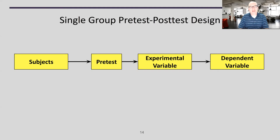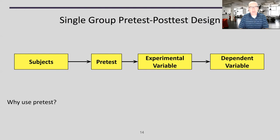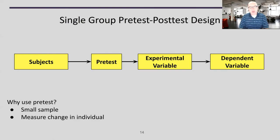A slightly more complex design is the single group pre-test/post-test design. Now a pre-test is introduced before the treatment and the experimental variable. This gives me a chance to measure something about participants before and after, so I can see if there's actually a change. Why use a pre-test? If I have a small sample, I really do need to know something about participants beforehand — the smaller the sample, the more impact one person can have on results. This allows me to measure the change in individuals, because I know something about you before and after.